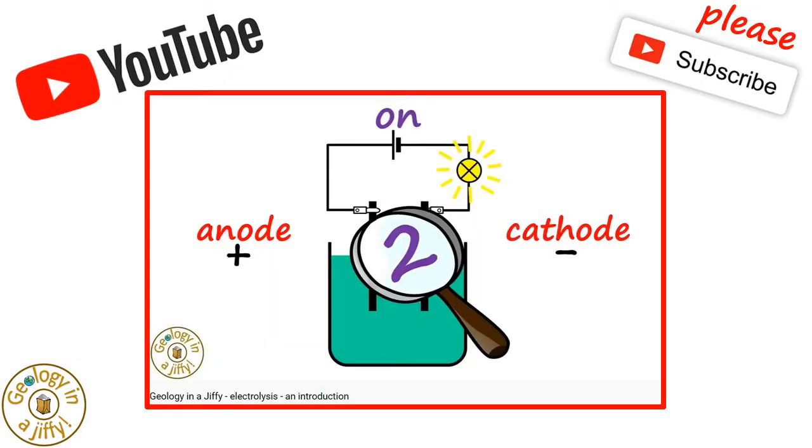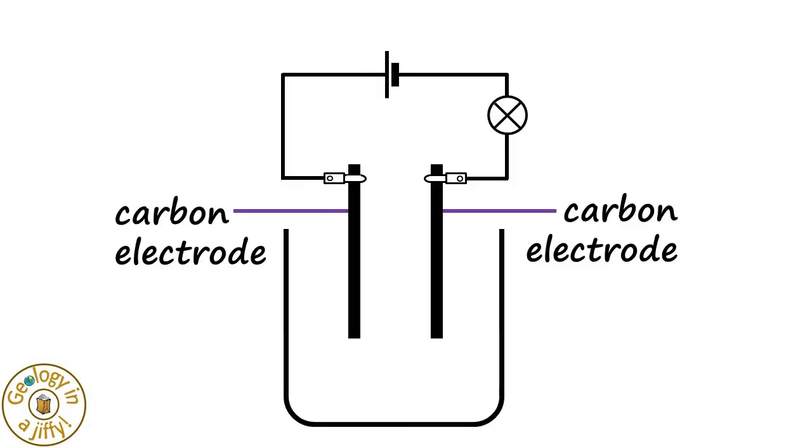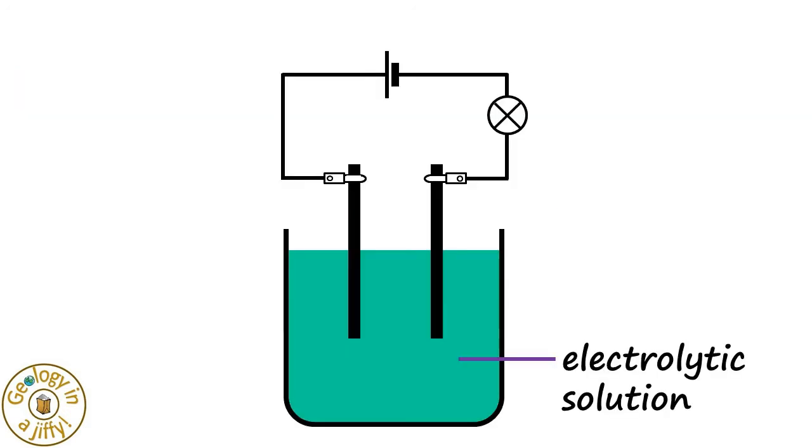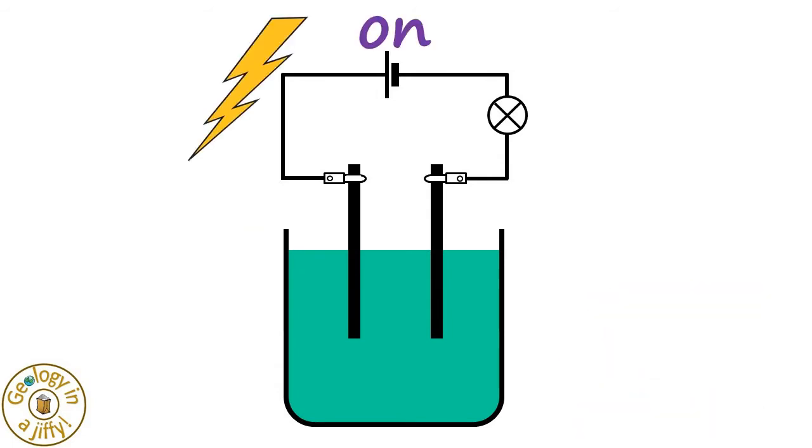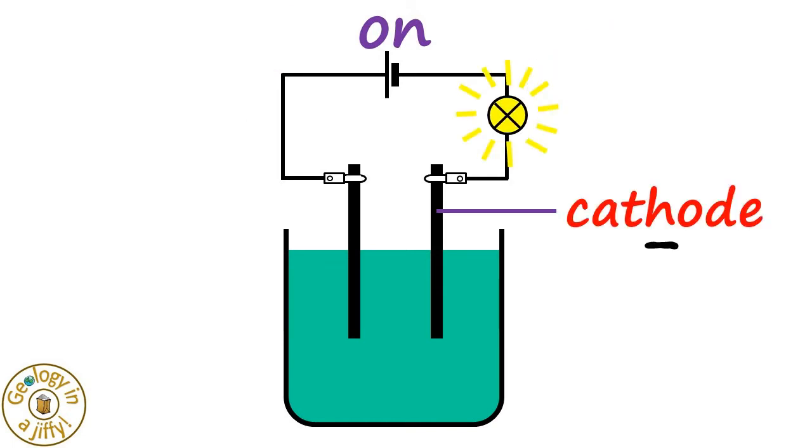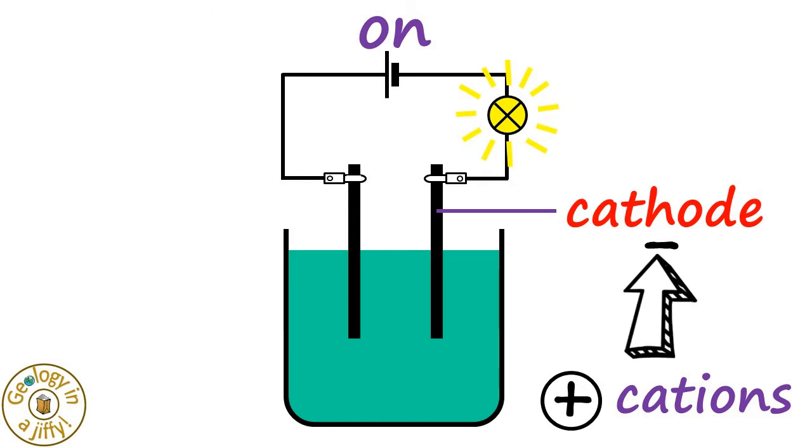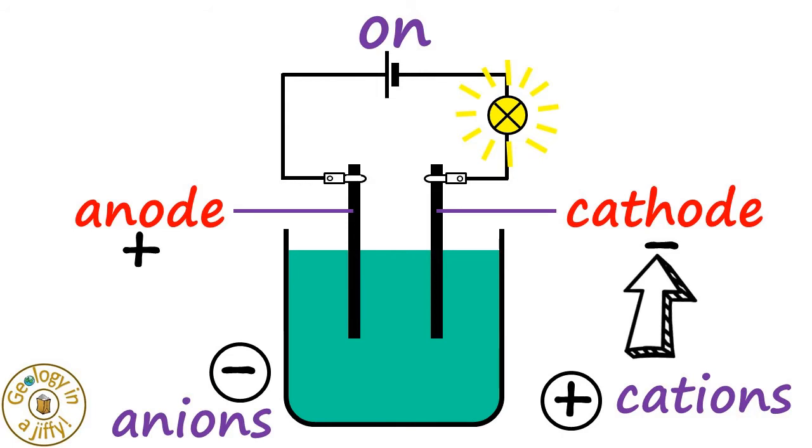We know from our electrolysis video that electrolysis uses this apparatus with two carbon electrodes. When placed in an electrolytic solution such as copper chloride solution and we turn the electrical current on, the lamp will light because at the cathode, positively charged cations are attracted to the negatively charged cathode, and at the anode, negatively charged anions are attracted to the positively charged anode.